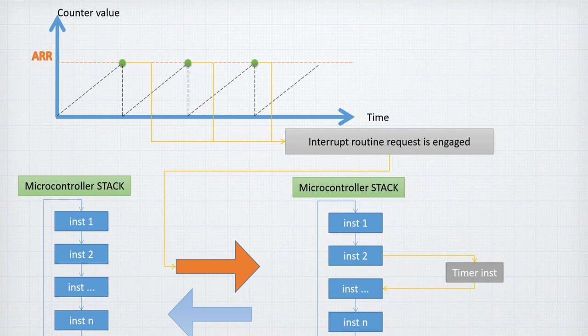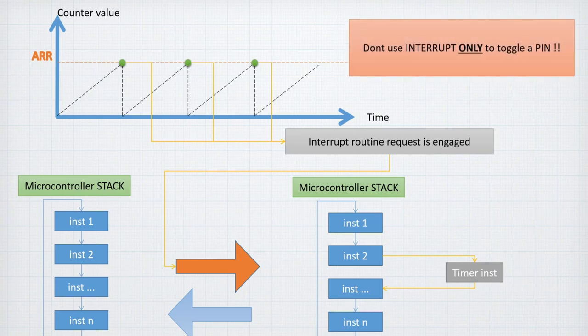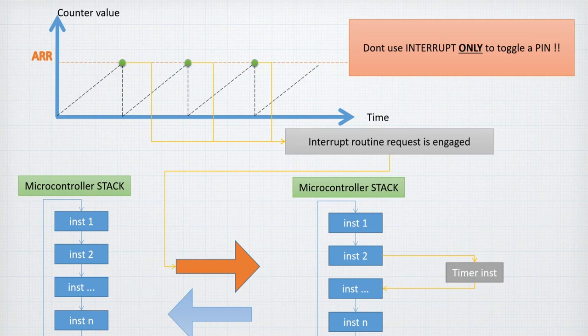One important remark: don't use interrupts only to toggle a pin. The example here is just to toggle a pin to see what's going on, but interrupts can be used to send messages, perform computations, or run checks at timed intervals. There's also a better way in compare mode to toggle a pin directly without using an interrupt.